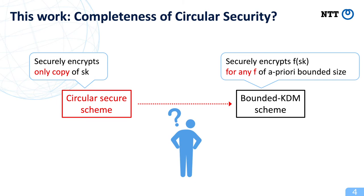In this work, we tackle the question of whether circular security is also complete for KDM security. Circular security is a security notion that allows us to encrypt only copy of secret key bits. So circular security is a weaker form of KDM security compared to even projection KDM security, which allows us to encrypt both copy and negation of secret key bits. In other words, the question we study is whether the weakest form of KDM security implies the strongest form of KDM security.